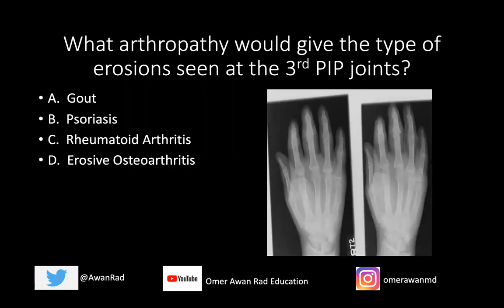The question I have for you is: what arthropathy would give the type of erosion seen at the third PIP joints in the hands here? Would it be gout, psoriasis, rheumatoid arthritis, or erosive OA? And of course, the answer here is gout.